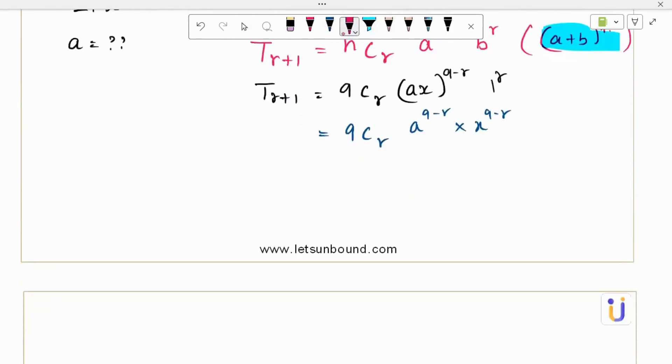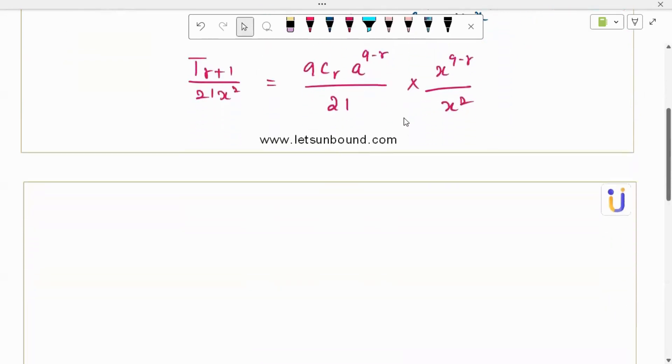Now I need to find a, okay this is the general term. So T_r+1 divided by 21x square. For every term this divided 21x square will come up. Then only the expansion will get complete. So 9Cr, a power 9 minus r divided by 21 times x power 9 minus r divided by x square. Right? Now let's follow this.